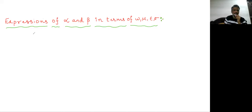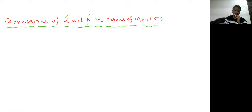Hi students, my name is Satish Kumar. In this video lecture I'm going to tell you the expressions of alpha and beta in terms of omega, mu, epsilon, and sigma. We require these expressions to study electromagnetic wave characteristics in good dielectrics as well as good conductors.